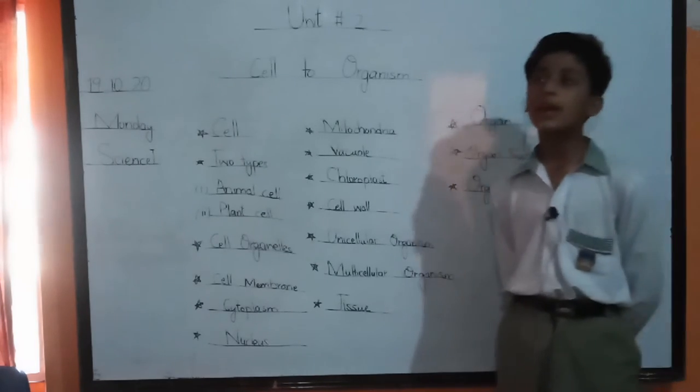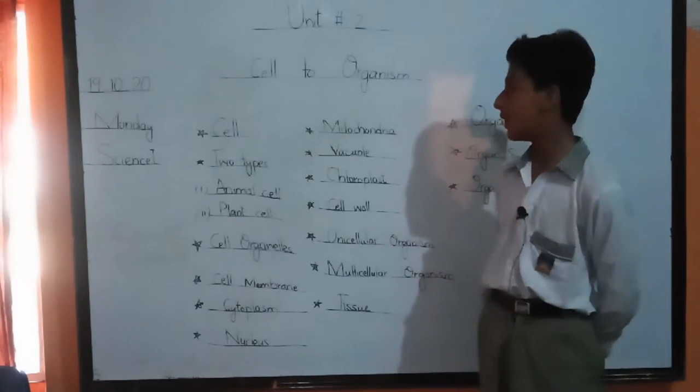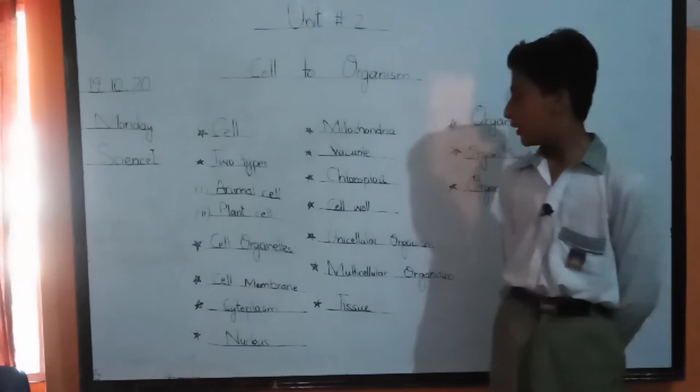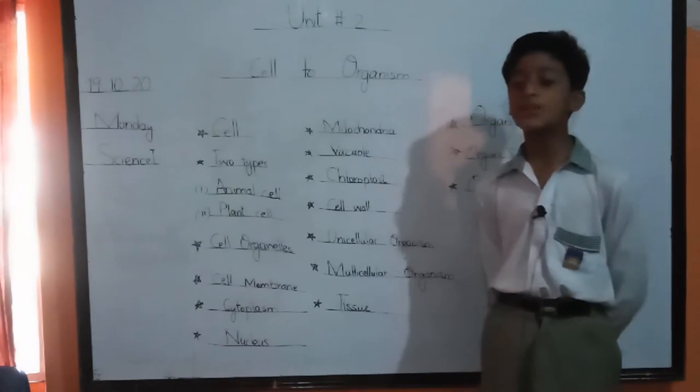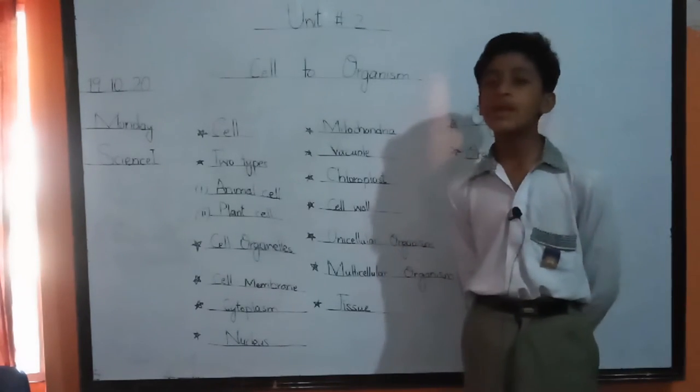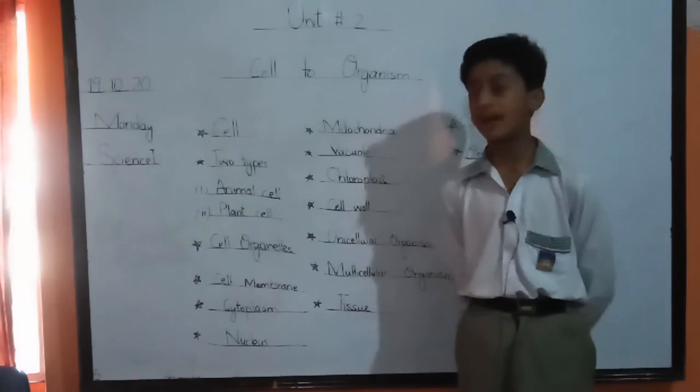Mitochondria. Mitochondria is the powerhouse of cells. Vacuole. In animal cells there are many small vacuoles present which store food and water for animal cells.